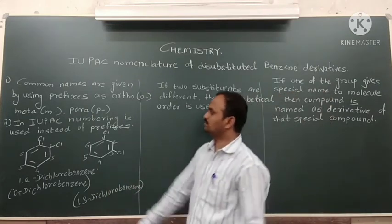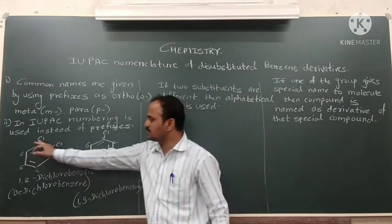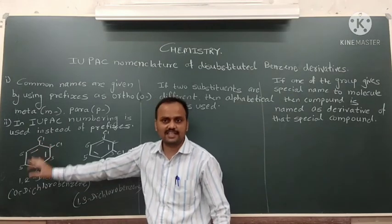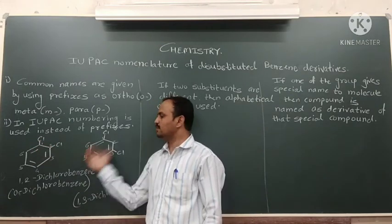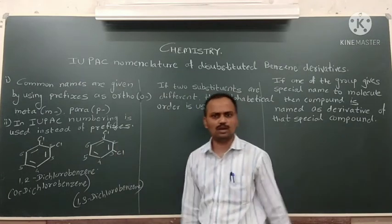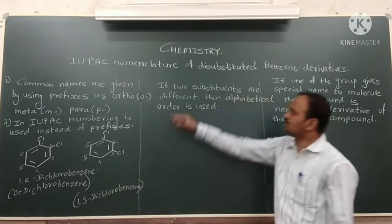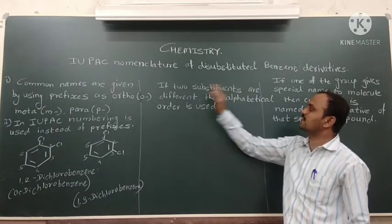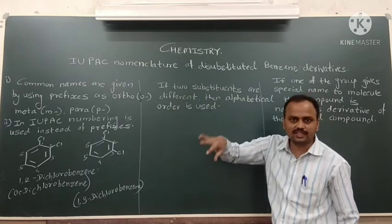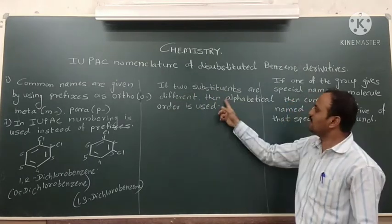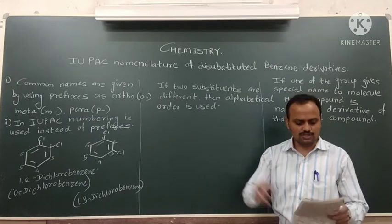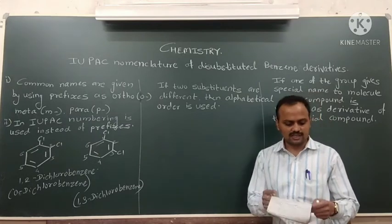When the same group or atom is attached to benzene we use that approach. The second type is when two different substituents are present — then alphabetical order is used. Let us see the example.